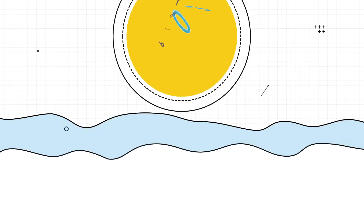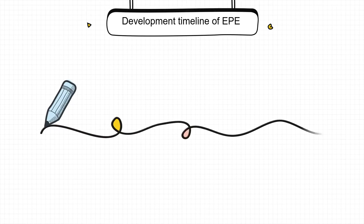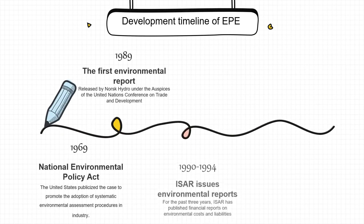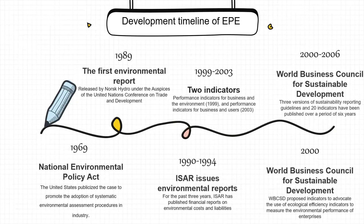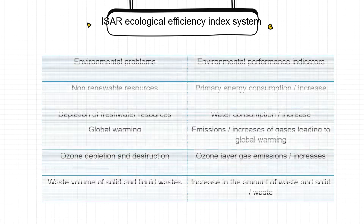The third part is the emergence and development of environmental performance evaluation. Over the past 50 years, the development of environmental performance evaluation has made great progress, especially with key breakthroughs. We have developed a timetable to understand its emergence and development. In 1994, the Canadian Accounting Association listed environmental performance indicators in seven industries across 15 regions, while Japan's Environmental Policy Priority Index is a method to evaluate the overall environmental performance of enterprises — two different methods that greatly promoted the development of performance evaluation.